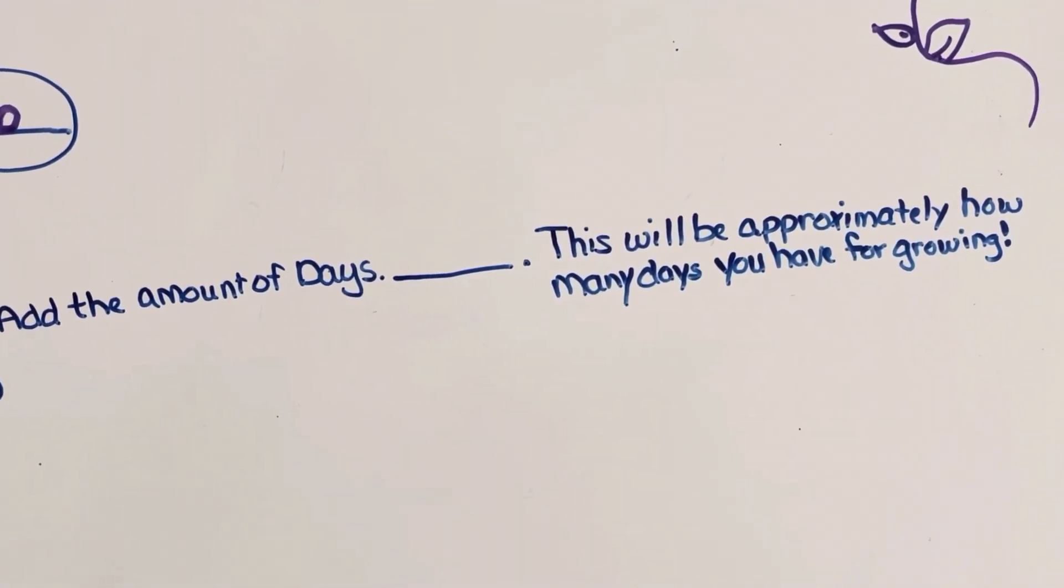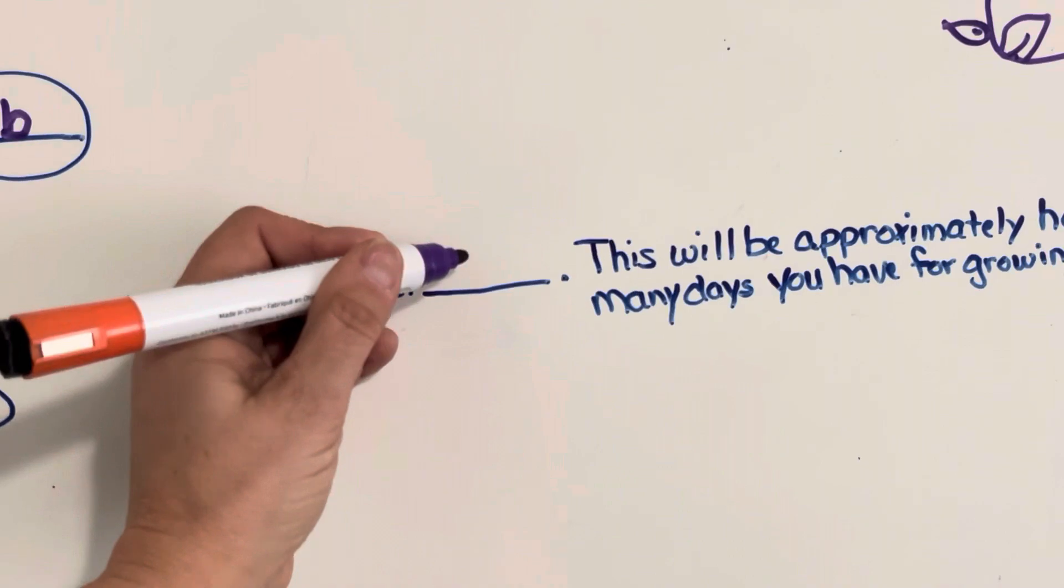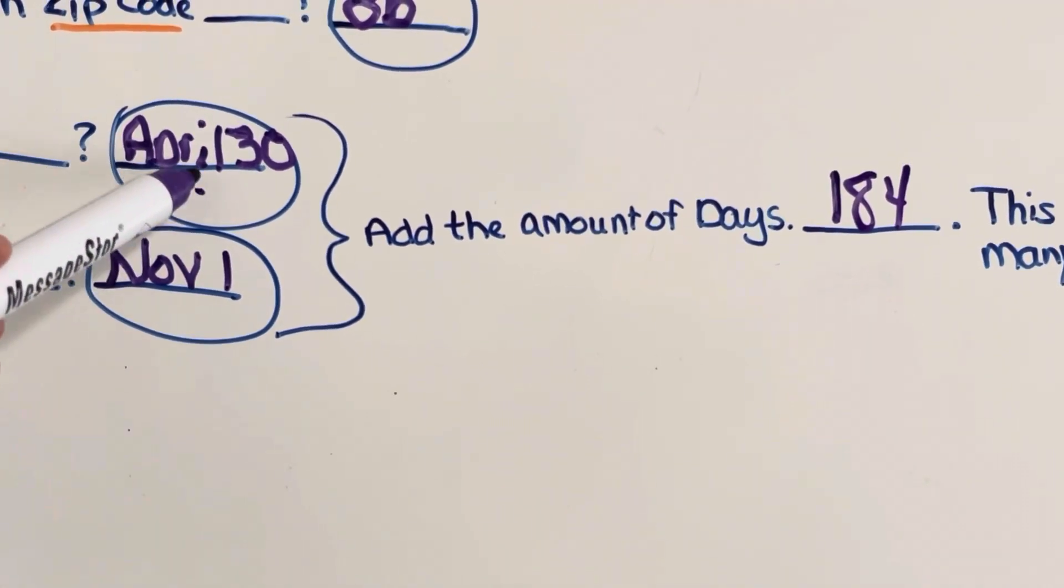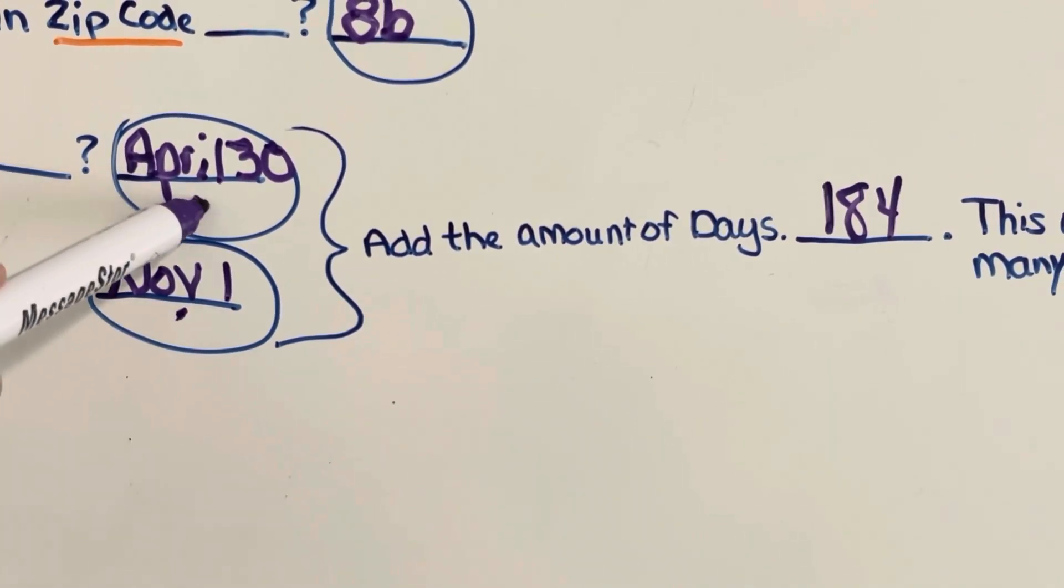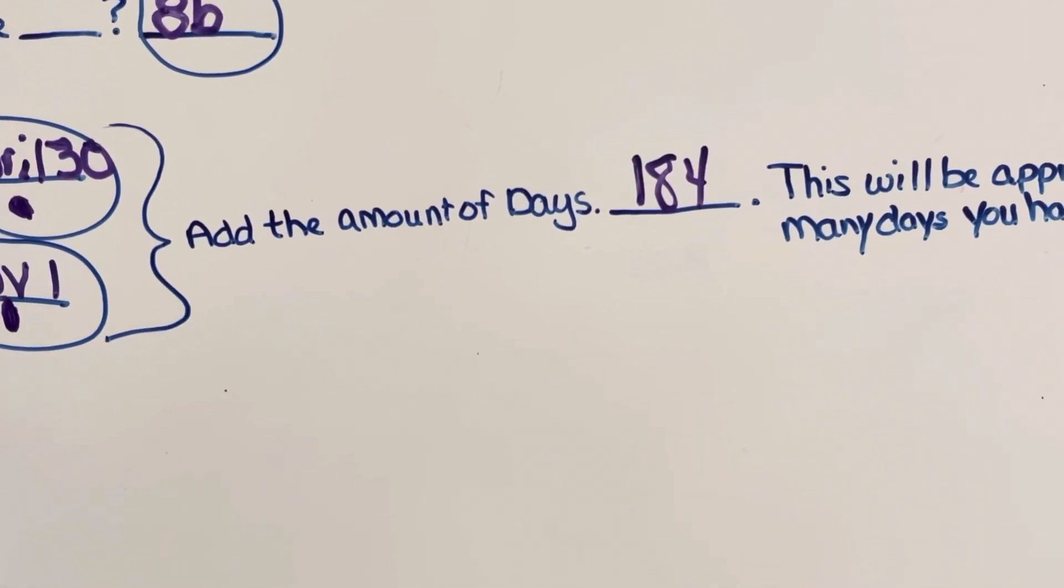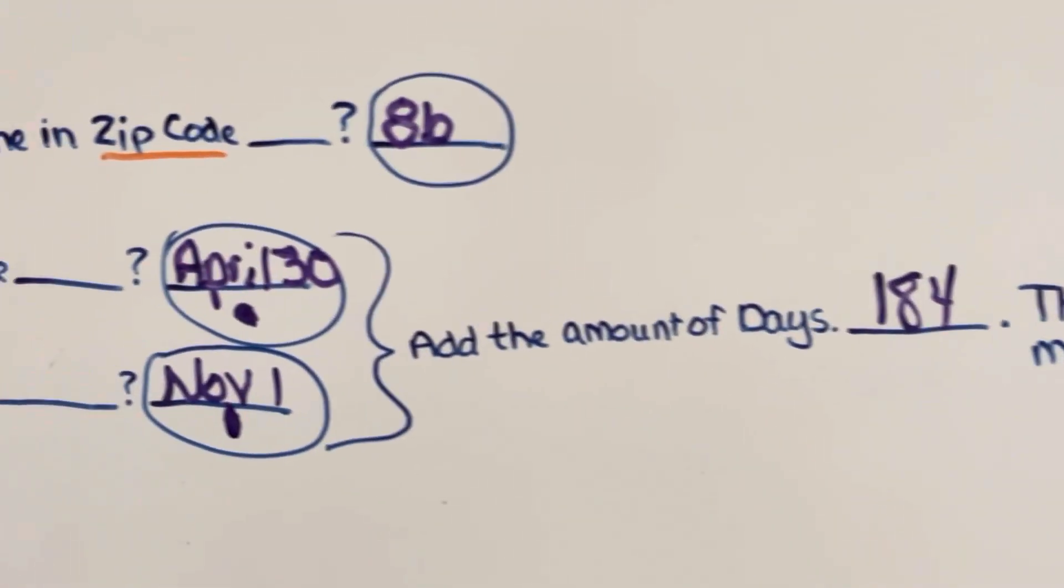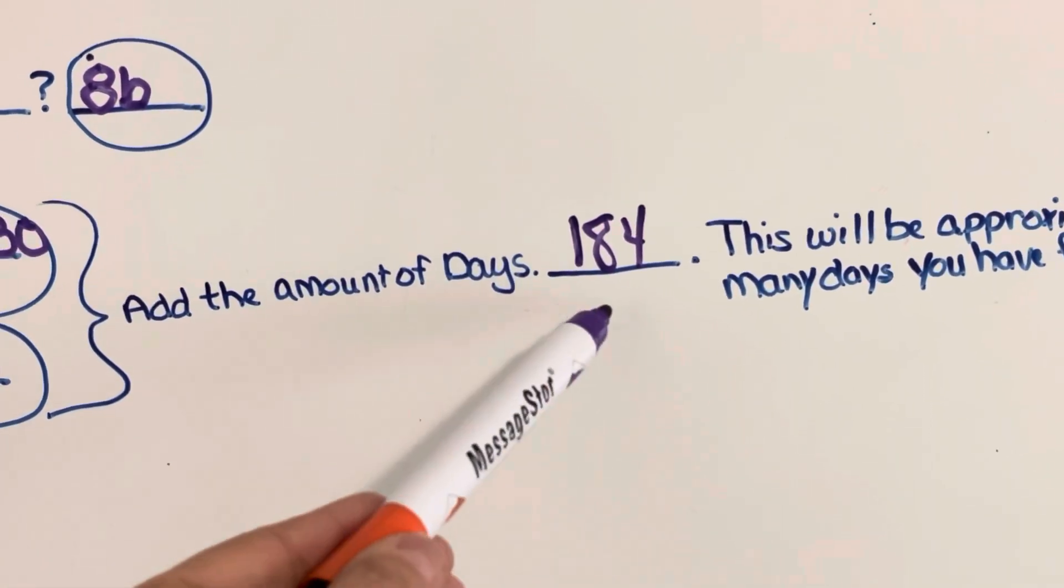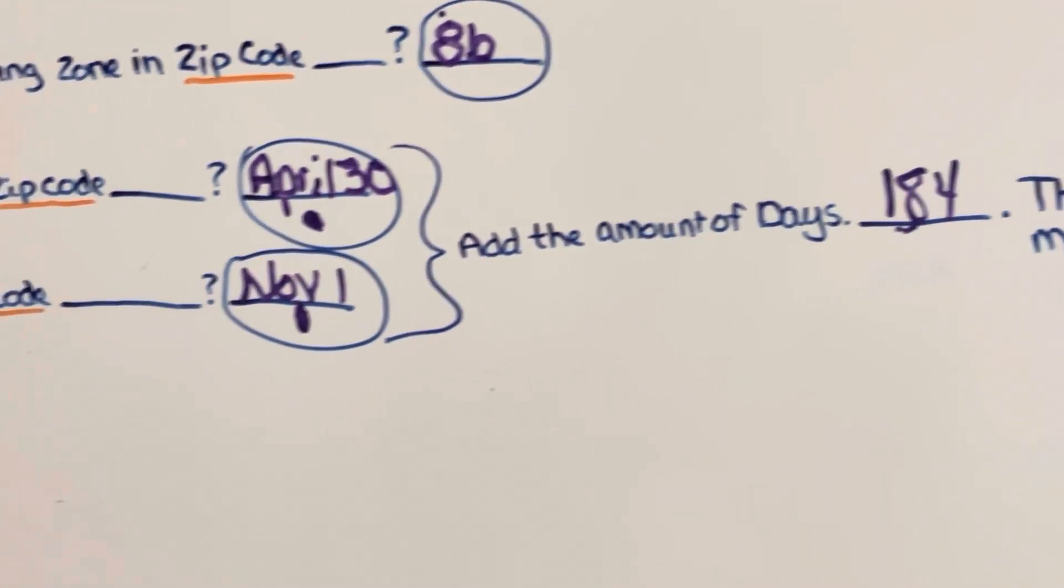So I have just to write it down and show you, 184 days from my last frost date to my first frost date. That means from the spring until this fall. Some plants can grow well with a little bit of frost but some plants can't. So I have 184 days and I'm going to want to make sure that whatever I'm planting can grow in my zone for my zip code and that it can also grow within the 184 days that I have in my area.